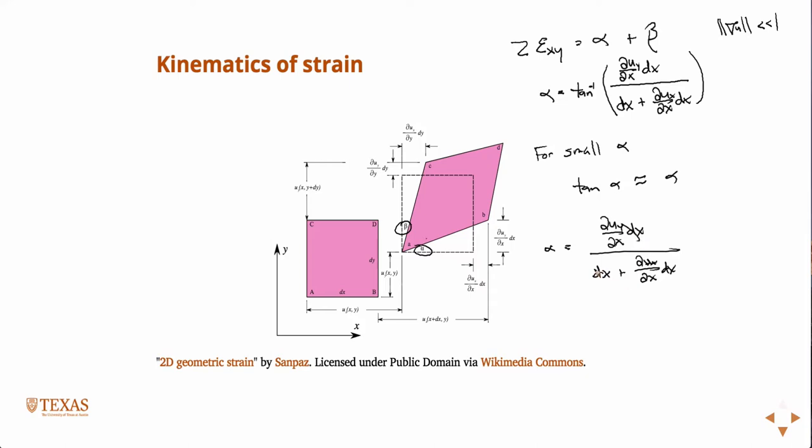So like that, all the dx's can cancel. So you have partial u_y partial x over 1 plus that guy. And so then again, using our definition of small, in the denominator here, we have 1 plus something small, right? So we're just going to say that 1 plus something small is approximately 1. And then that goes away and you're left with just the numerator.